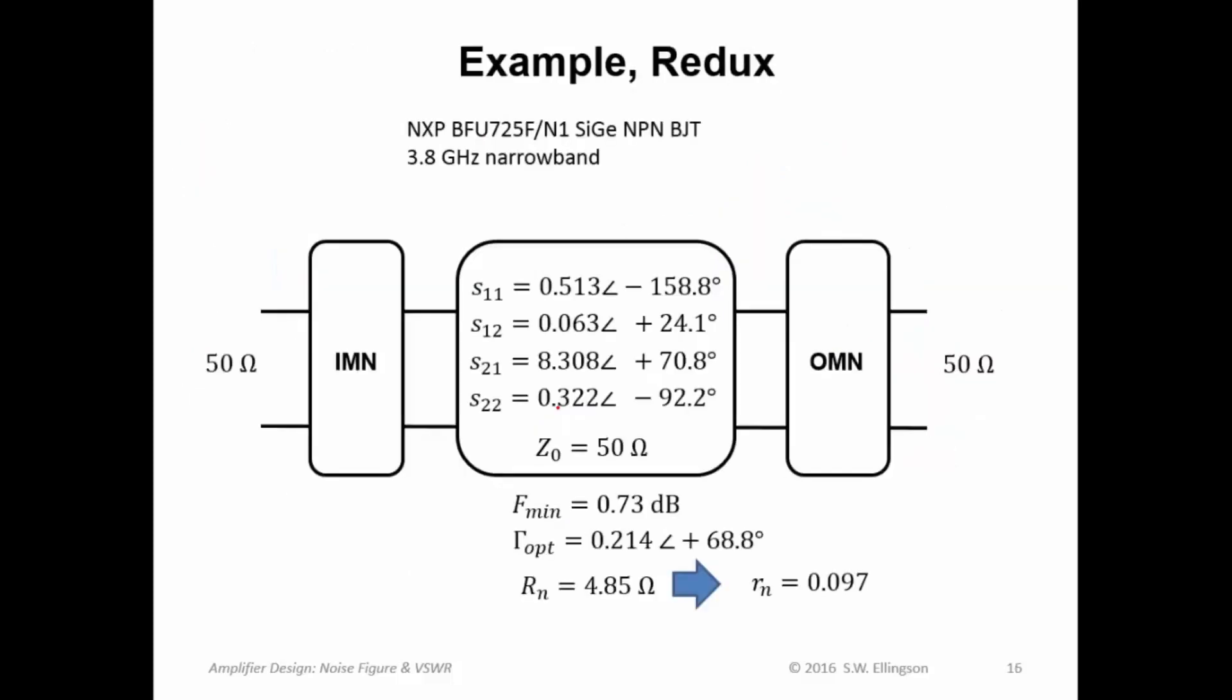So here's an example to show this idea. Same transistor, same frequency, so we have the same S parameters, same reference impedance, same noise parameters, same normalized load resistance. So we're starting off with the same example that we did previously, but now we're going to consider noise figures greater than the minimum noise figure. So we want to explore the possible combinations of gain and noise figure available here. And just remember, this transistor is only conditionally stable, so whatever values of gain and noise figure we come up with makes sense only if we see that the transistor is stable for those particular choices.